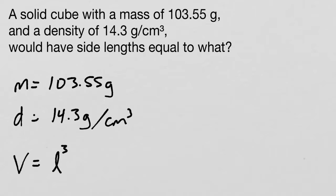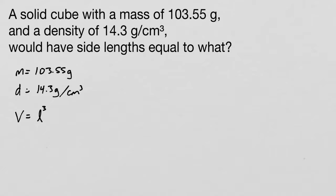We want to know what the length of one side is, so let's start with the information that we are given. We're going to start with 103.55 grams, and use the density to get us into centimeters cubed. We want to have our grams on bottom, centimeters cubed on top, and we'll get our volume here: 7.24 centimeters cubed.